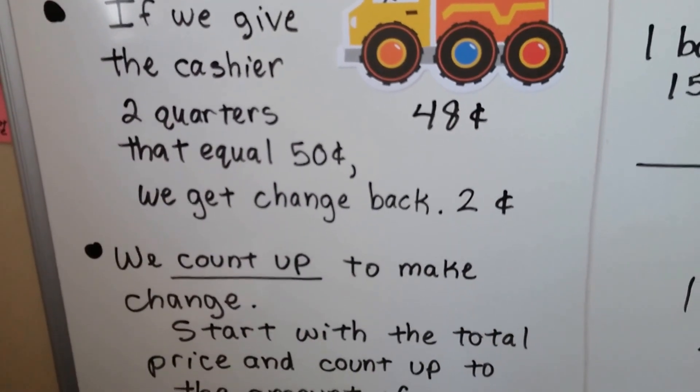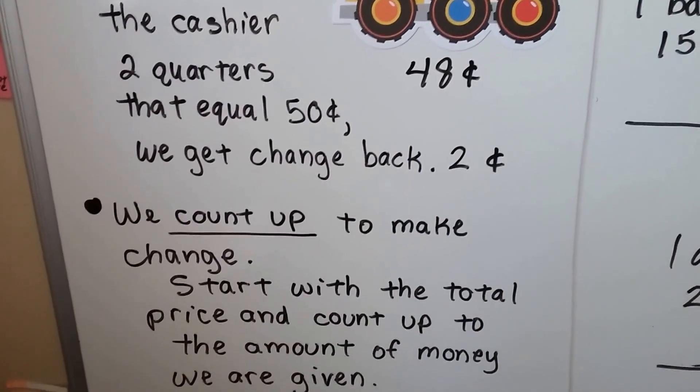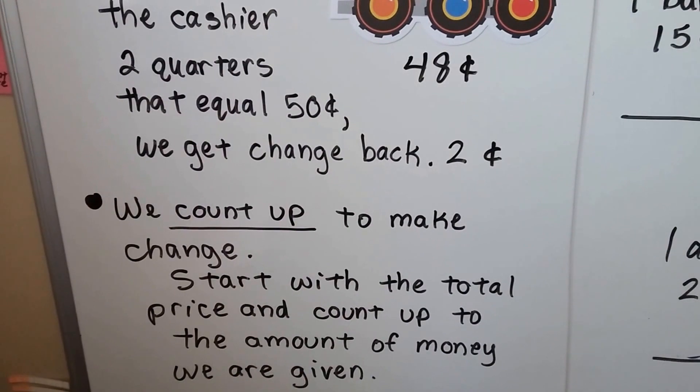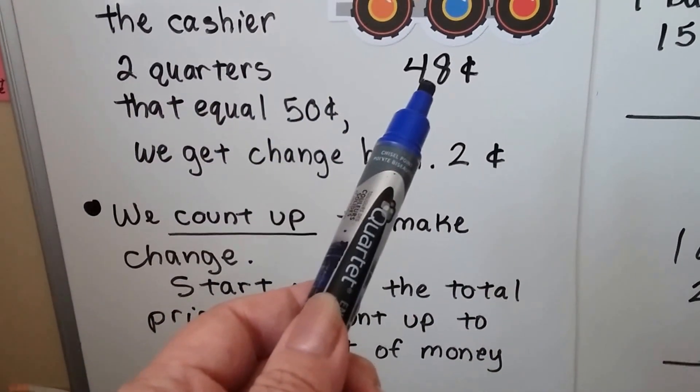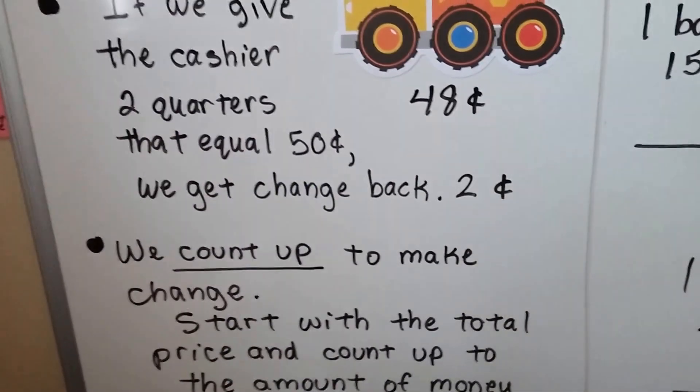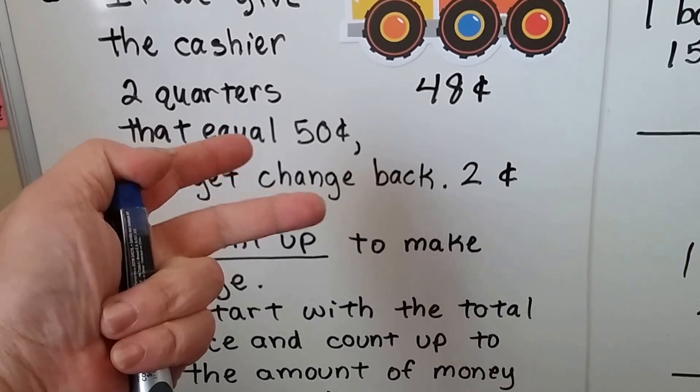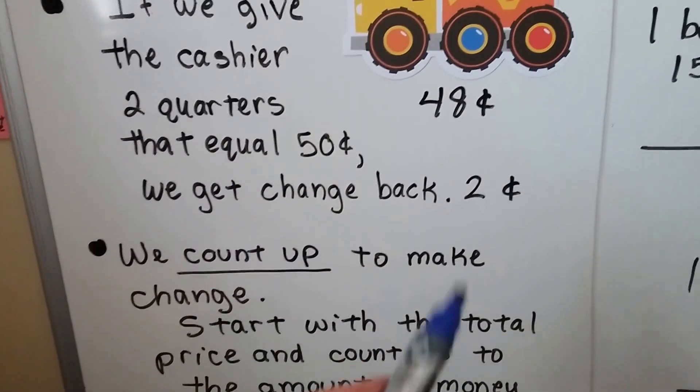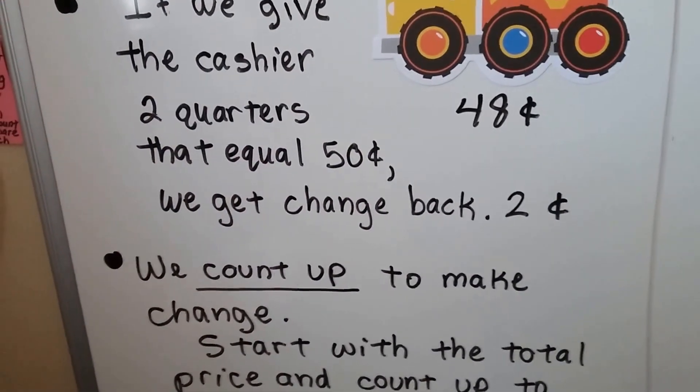We count up to make change. We start with the total price, the 48 cents, and count up to the amount of money we're given. So if the truck costs 48 cents and we give 50 cents, we start with the 48 and say 49, 50. That's two cents. That's the change, that's the difference between the money we gave them and the price.